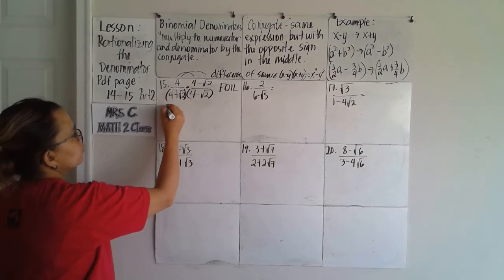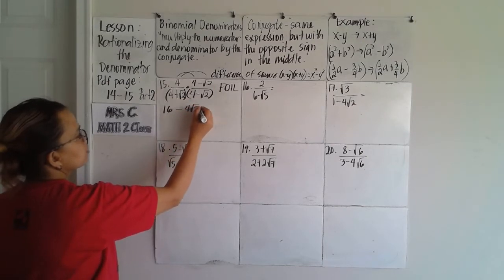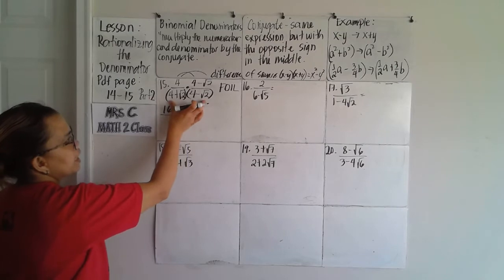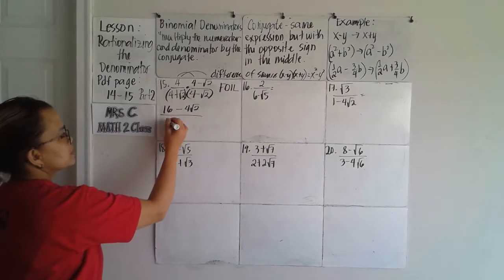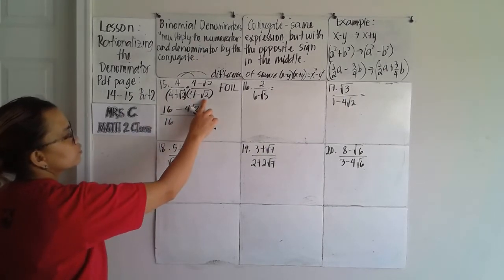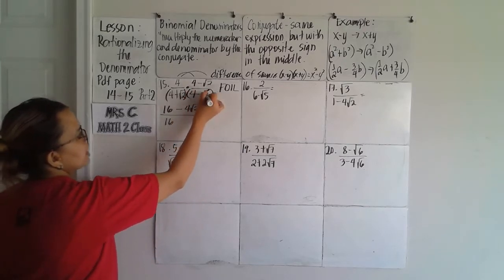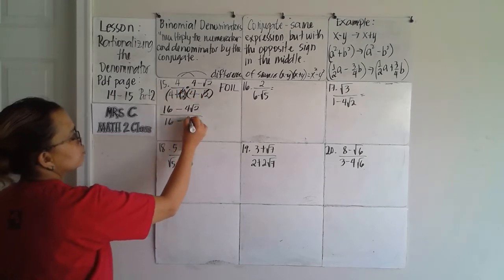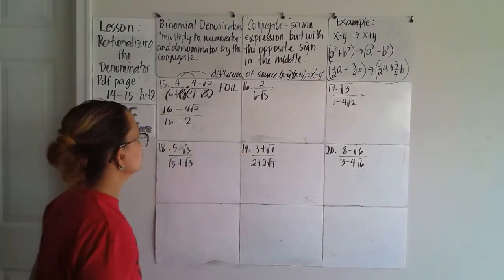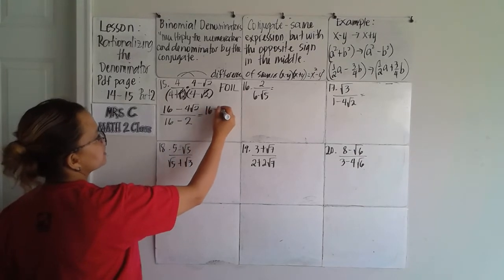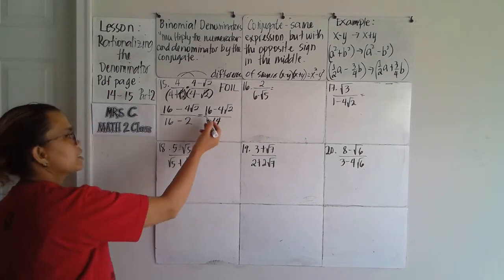For the numerator: four times four gives sixteen, and four times negative square root of two gives negative four square root of two. For the denominator, using the difference of squares: four times four is sixteen, and square root of two times square root of two — same radicand cancels, giving just two — so we have sixteen minus two, which is fourteen. All answers using difference of squares result in a subtraction. So we have sixteen minus four square root of two over fourteen.